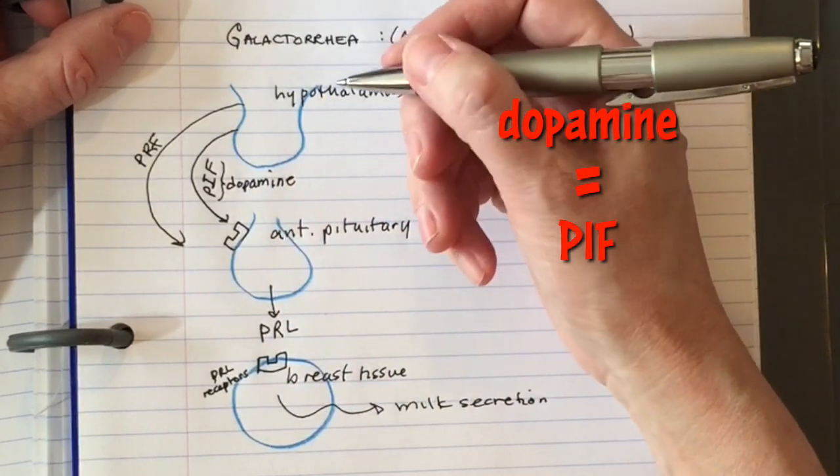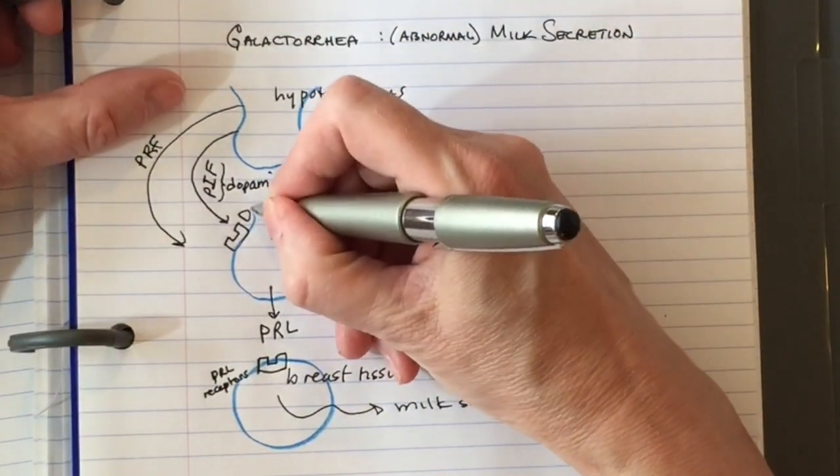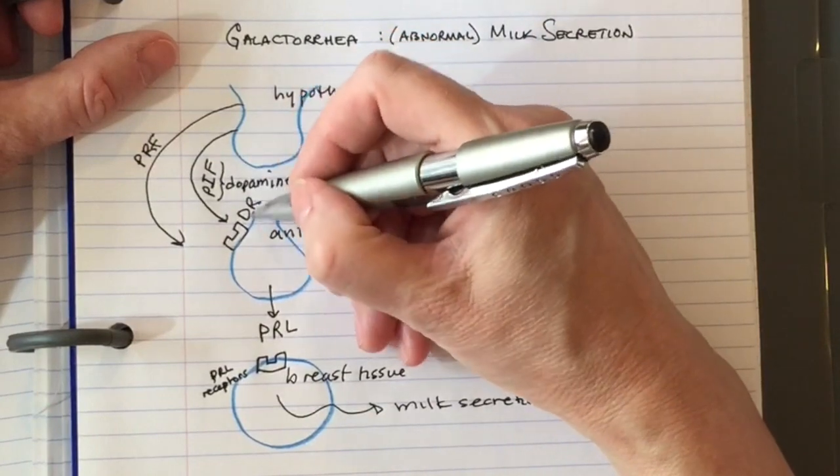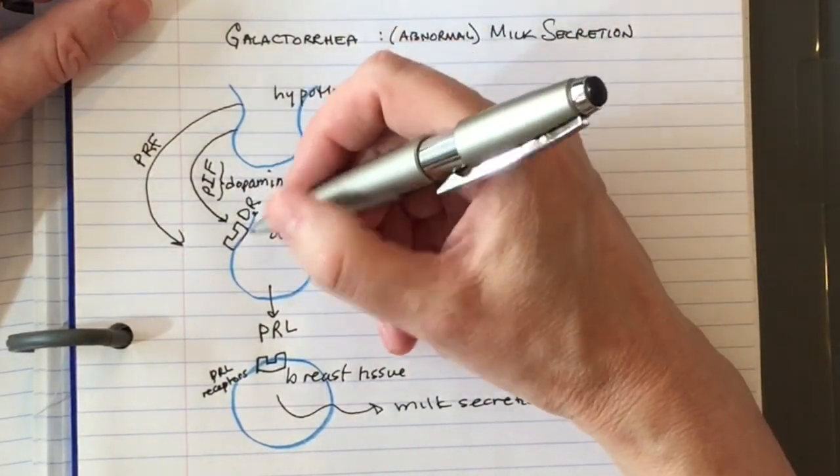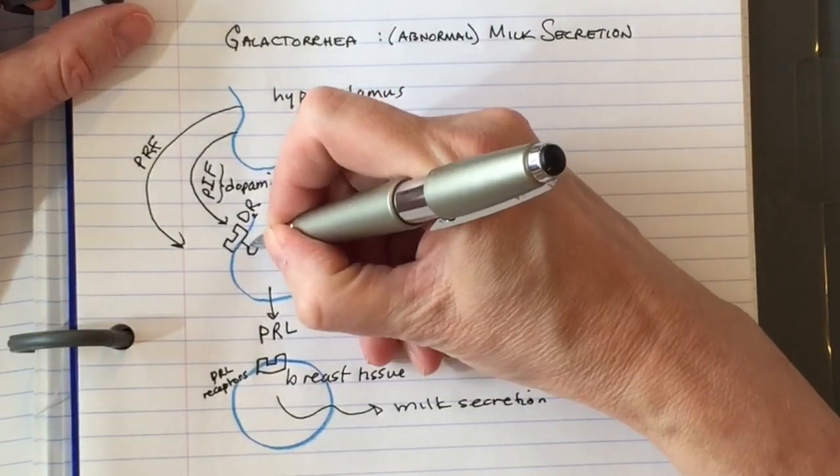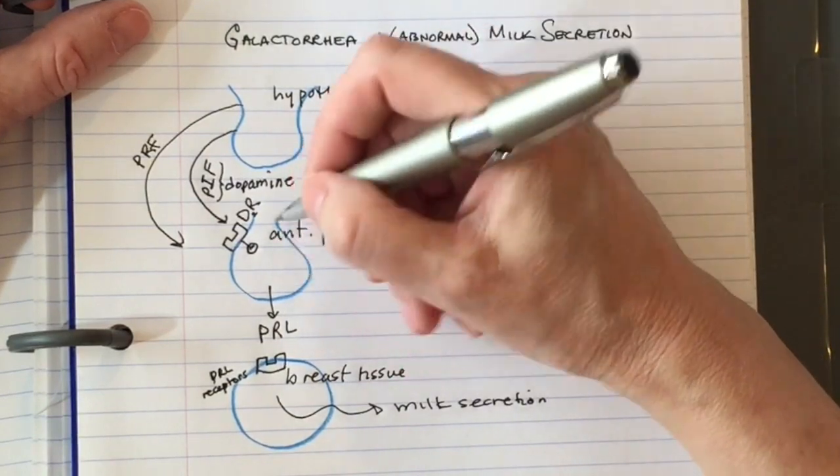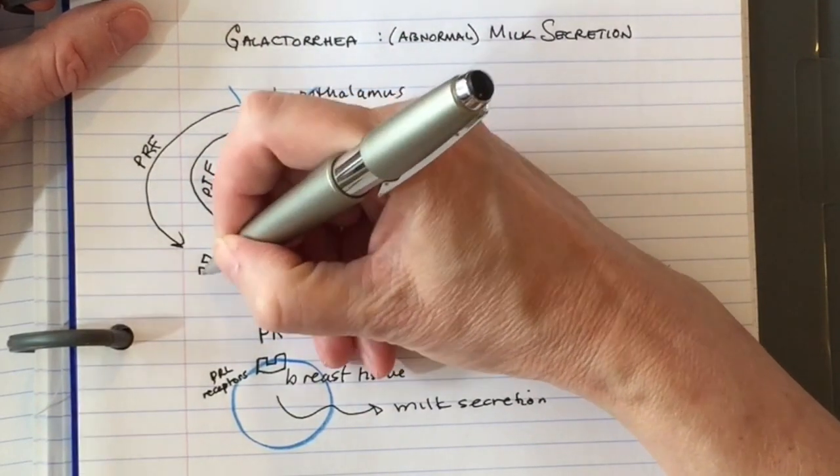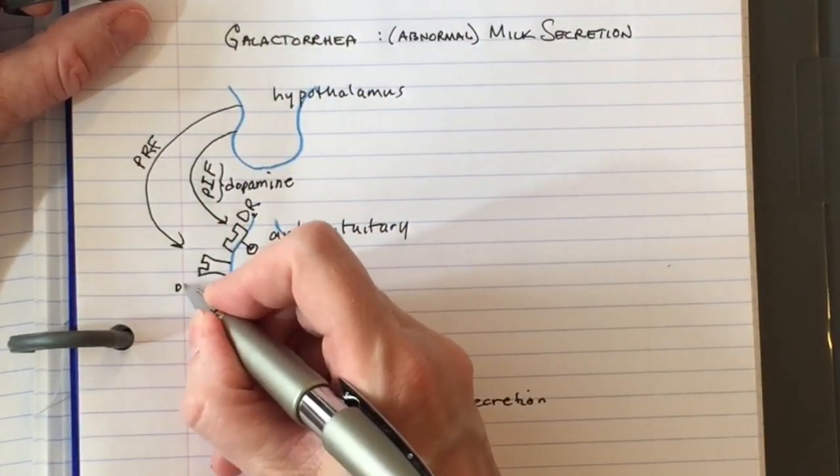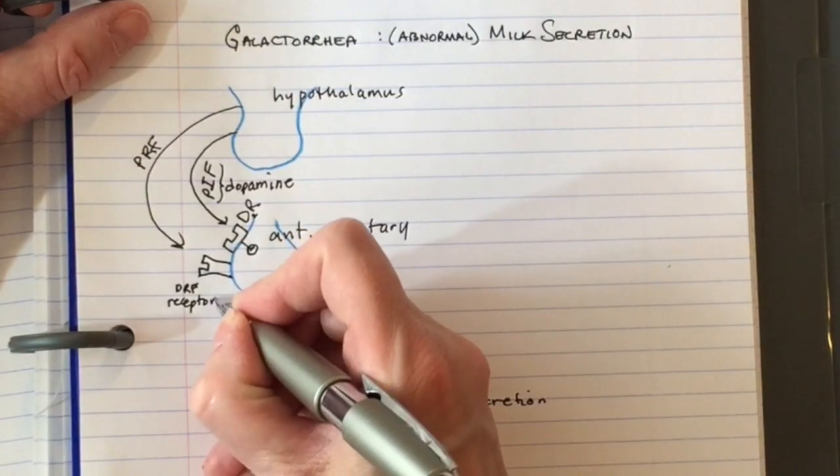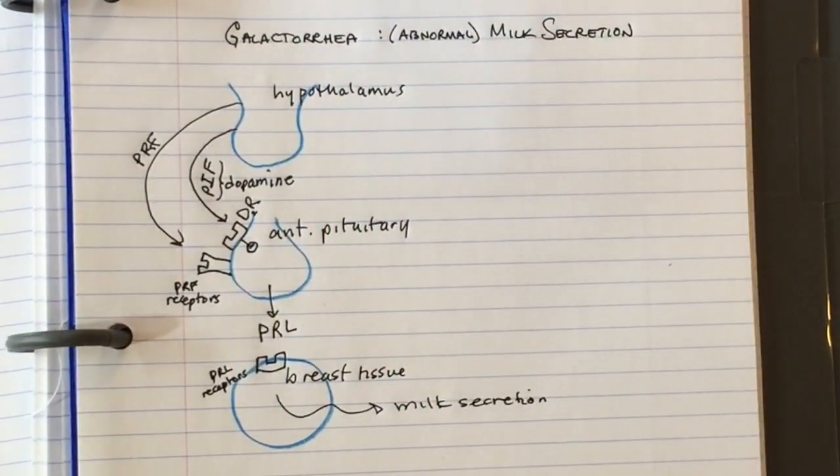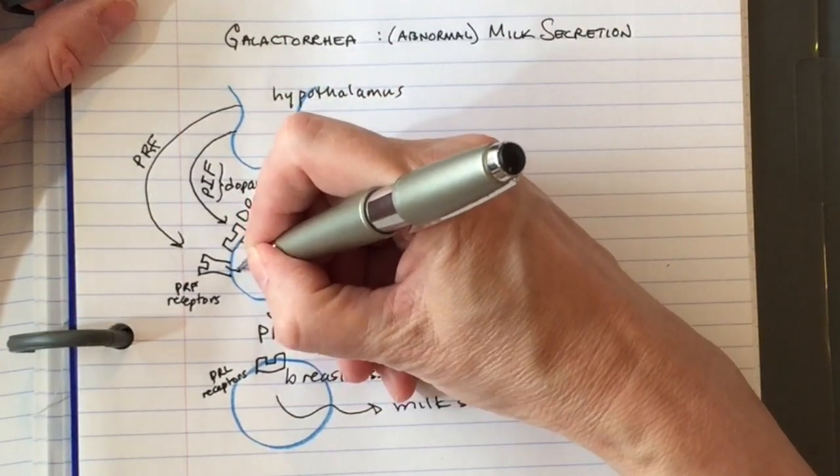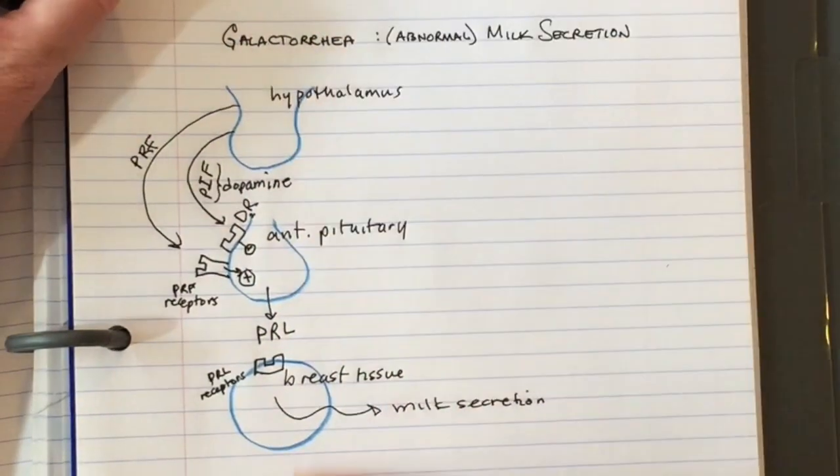Prolactin inhibitory factor binds dopamine receptors and inhibits production of prolactin. Prolactin releasing factor binds prolactin releasing factor receptors, causing stimulation of prolactin. That's the normal situation.